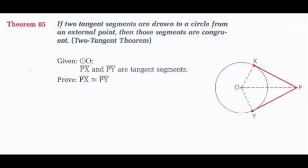With tangent segments, there's an important theorem called the two tangent theorem: if two tangent segments are drawn to a circle from an external point, then those segments are congruent. For circle O, PX and PY are tangent segments. OX is congruent to OY as radii, OP is congruent to OP by reflexive property, and angles X and Y are both right angles since radii to the point of contact are perpendicular. The triangles are congruent, so PX is congruent to PY by CPCTC.